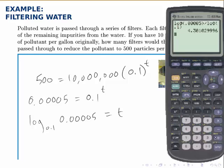T is 4.3. Now you can't have 4.3 filters, you either have 4 or 5, so what this says is after 4 filters it wouldn't quite have reached the desired limit, but after 5 filters it certainly would have. So the answer is that 5 filters are needed in order to reduce this pollutant to the desired level.